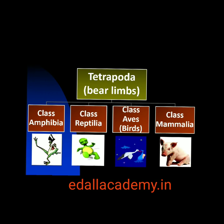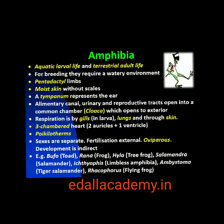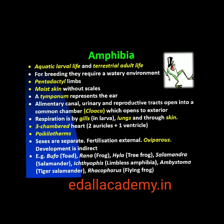Fourth is class Amphibia. As the name indicates, the Greek word 'amphi' means dual and 'bios' means life. Amphibians can live in aquatic as well as terrestrial habitats. Most of them have two pairs of limbs. Body is divisible into head and trunk. Tail may be present in some. The amphibian skin is moist without scales. The eyes have eyelids. Tympanum represents the ear. Alimentary canal, urinary and reproductive tracts open into a common chamber called cloaca which opens to the exterior. Respiration is by gills, lungs and through skin.